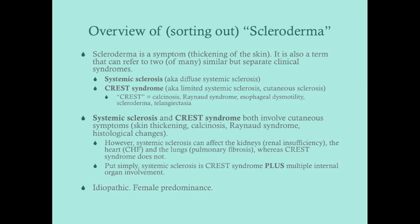Both syndromes also involve Raynaud's syndrome — a vasospasm of the arteries or lack of perfusion to the distal hands — esophageal symptoms, which is generally dysmotility and could be either GERD or achalasia, scleroderma (generally sclerodactyly in CREST syndrome), and telangiectasia. The way you differentiate them is that systemic sclerosis has more systemic symptoms, affecting the kidneys, heart, and lungs, whereas CREST syndrome is more limited to just those CREST symptoms.